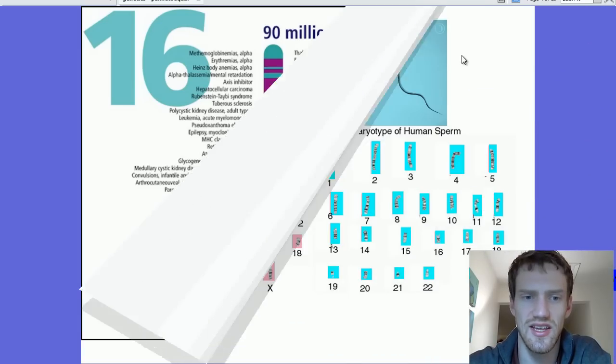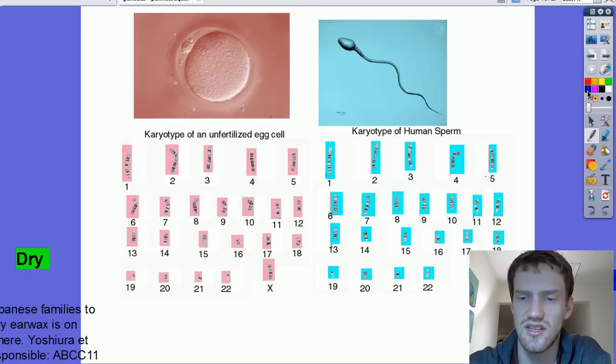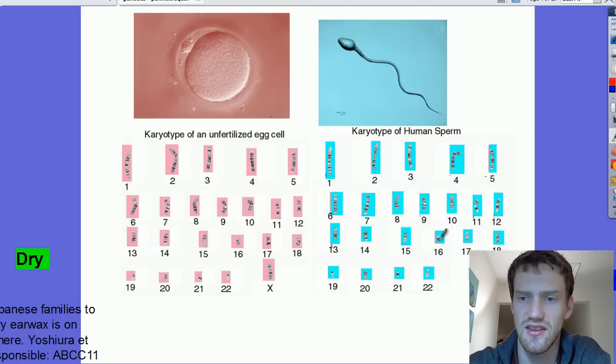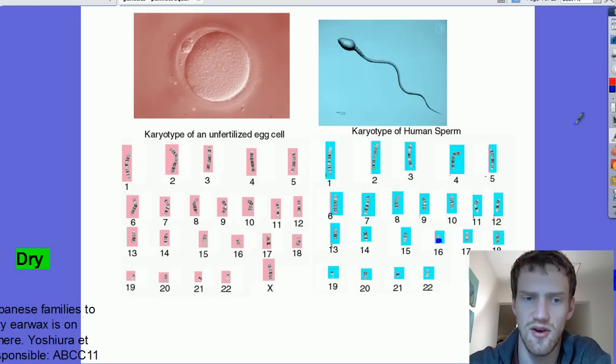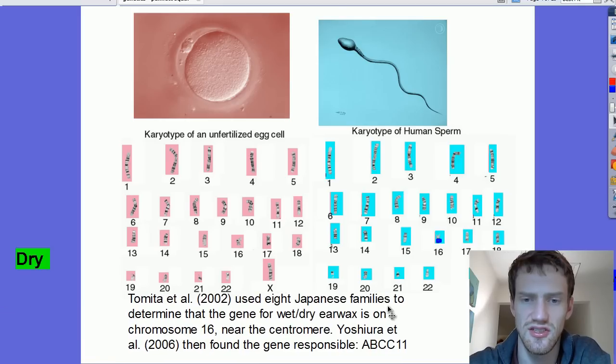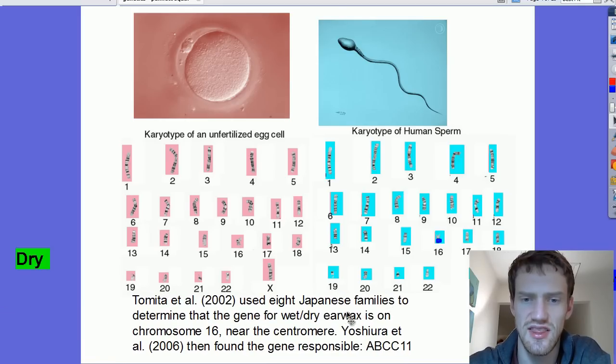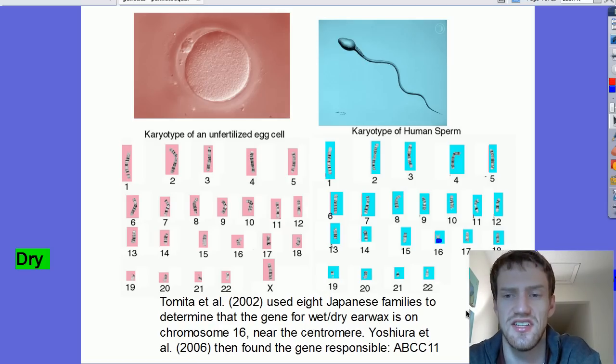One of the cool things about chromosome 16 is that it actually carries a gene that encodes for earwax. I'm going to highlight chromosome 16. There is this region in the middle of chromosome 16 that encodes for earwax. I'm going to highlight that loci right there. In 2002, Tomata et al. used eight Japanese families to determine that the gene for wet and dry earwax was on chromosome 16 near the centromere.